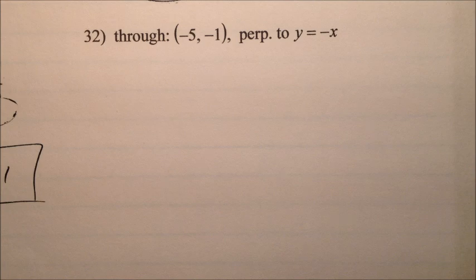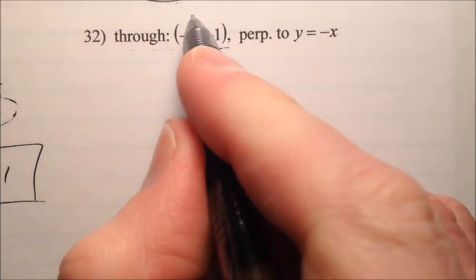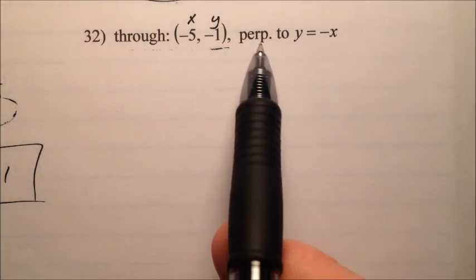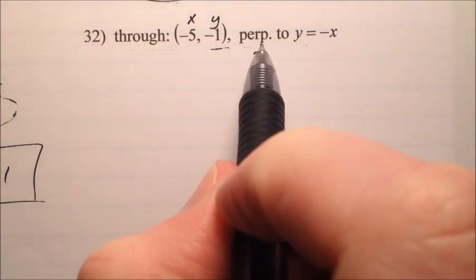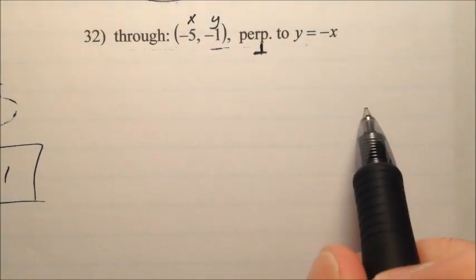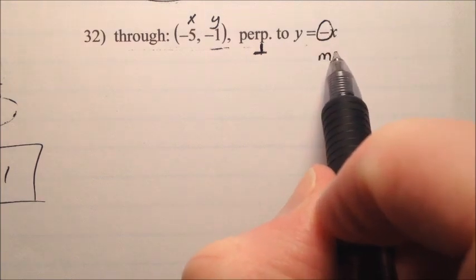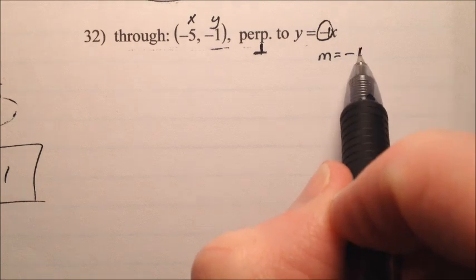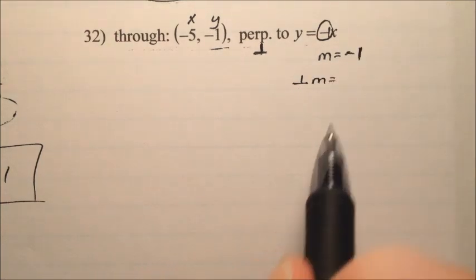And number 32 is the final problem of my parallel and perpendicular line section. So we know our new line is going to pass through negative 5, negative 1, so I have an x value and a y value I can use. I also know it's going to be perpendicular to this, to y equals negative x. What's the slope right here of this line? It seems like this slope is negative 1, because if we squeezed a 1 in there.